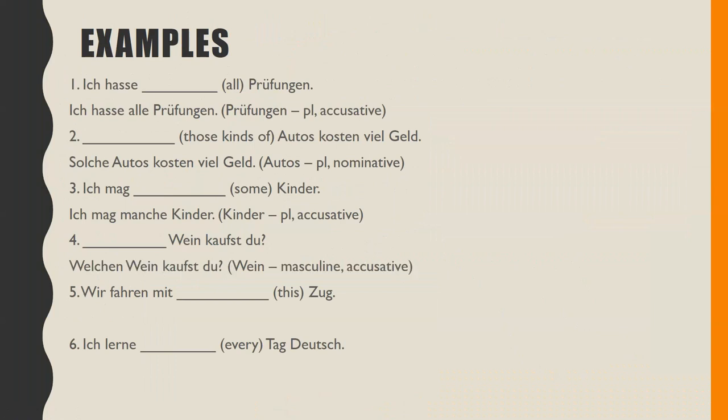'Welchen Wein kaufst du?' 'Wein' is masculine and accusative. If you had 'er' for the ending, it's because it looks like a question. In normal sentences, the subject is first, the conjugated verb is always second, and then usually something else — maybe an object — is third. Here it's reversed order because it's a question. 'Which wine do you buy?' — you are the subject buying whichever wine, making 'Wein' accusative.